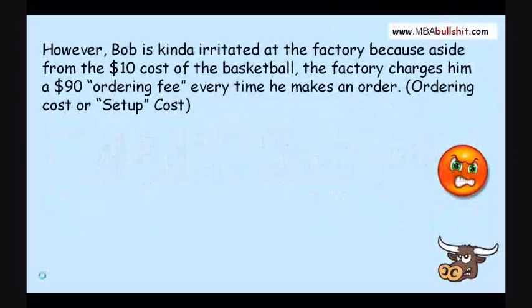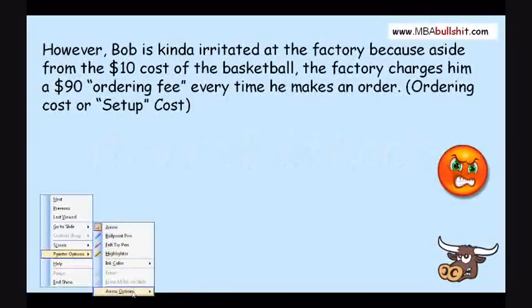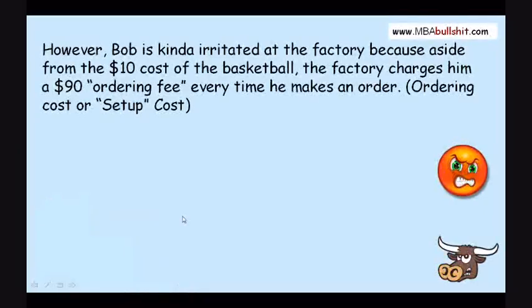However, Bob is kinda irritated at the factory because aside from the $10 cost of the basketball, the factory charges him a silly crazy $90 ordering fee every time he makes an order. Maybe you've experienced this when you buy stuff from discount airlines or whatever. They like to add on these crazy silly fees to earn extra money. So every time he makes an order, they charge him $90 ordering fee. In MBA bullshit language, we call this ordering cost or setup cost. Because sometimes it's not a fee for ordering, it's a fee to set up something. Every time they service you, maybe they have to set up something new just to service you, and so they charge you a setup cost.